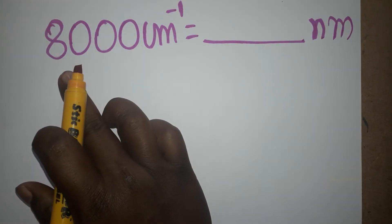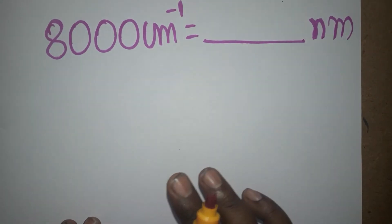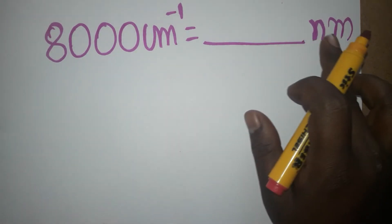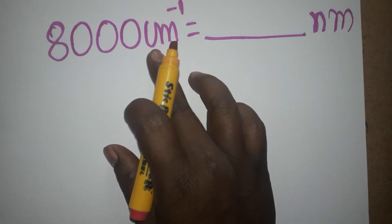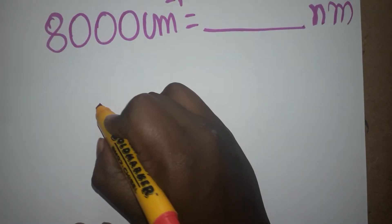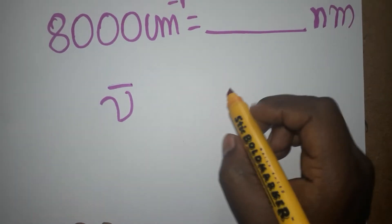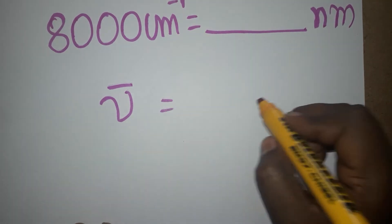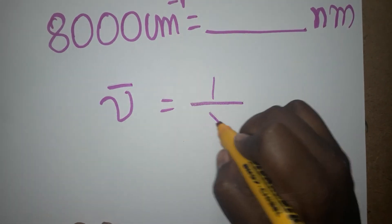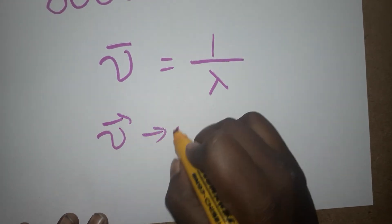Today we are going to learn: 8000 centimeter inverse is equal to how many nanometers. First, we will learn what centimeter inverse is. Centimeter inverse gives us the wave number, and nanometer gives us the wavelength. Wave number is one divided by wavelength — this is called wave number.